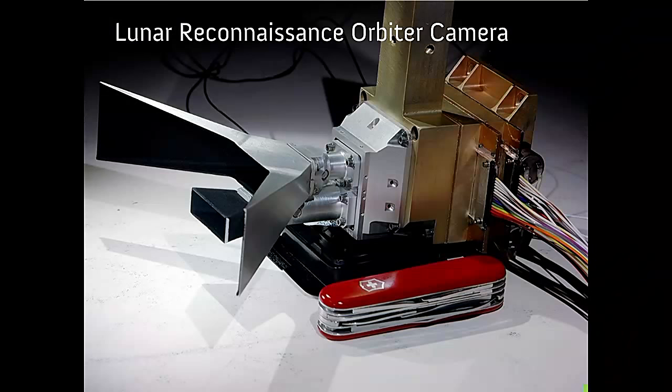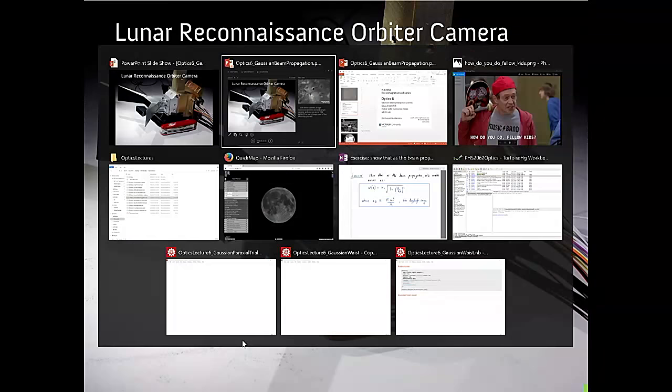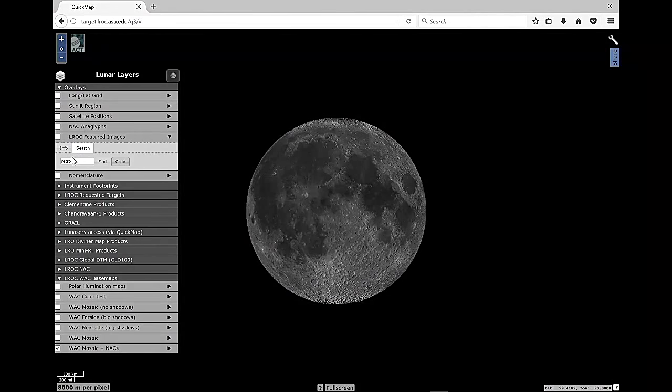So what does this thing do? Let's have a look. You can go to the Google Maps for the Moon. It's target.elrock.asu.edu. If you type in retro to the search bar here and click find, you'll find the Apollo 15 landing site.